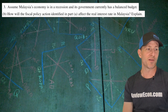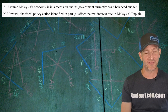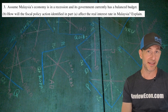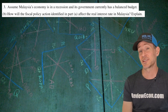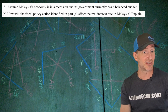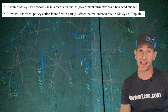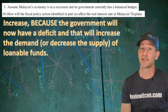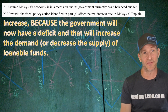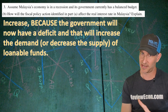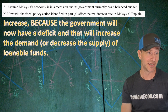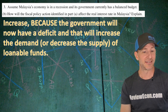For part B, how will the fiscal policy action affect the real interest rate in Malaysia? The real interest rate is a signal for the loanable funds market. Remember the government has been deficit spending as a result of this change — they had a balanced budget before, now they have a deficit. That will cause the interest rate to increase because the government deficit will increase the demand for loanable funds, or decrease the supply, which causes the real interest rate to go up.